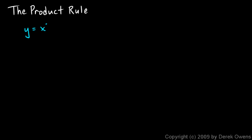The product rule allows us to take the derivative of a product of two functions. So if we have something like y equals x cubed times the sine of x, y is a function of x, but this particular function can clearly be thought of as two separate functions multiplied together. x cubed could be a function in its own right, and so could sine of x, and here they're multiplied together. So our function is a product of two functions.